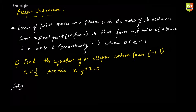Please feel free to solve this and type your response in the chat box. We use the definition that for any point P, SP/PM = e, so SP² = e² · PM². SP² is the squared distance from the focus: (x + 1)² + (y − 1)².